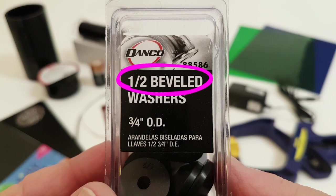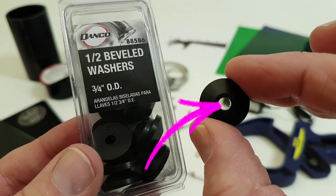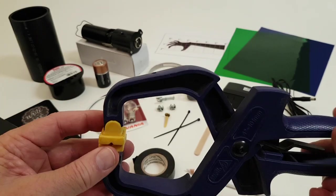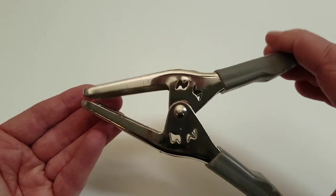One one half beveled washer with an outside dimension of three quarters of an inch. Look for one with the smallest center hole. One hand clamp. This will be attached to the ABS pipe and different types will work.